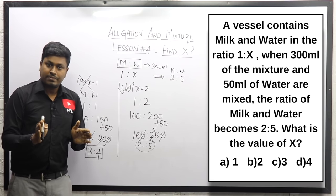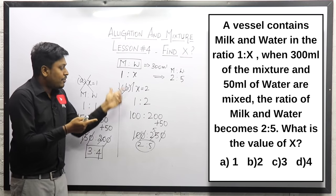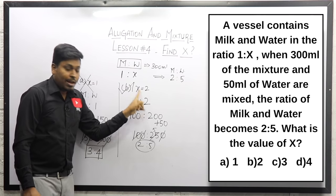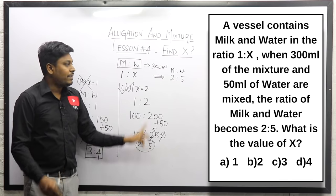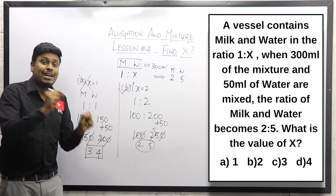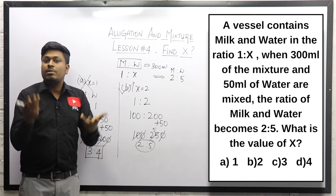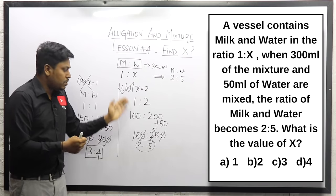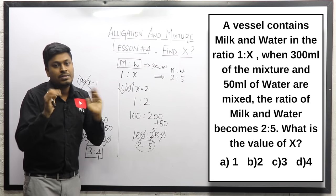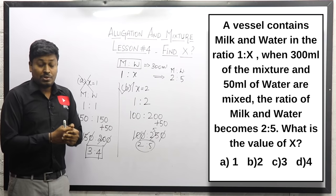While substituting x equal to 2, I got the answer 2 is to 5, so the value of x is 2. By using the options, I substituted the value of x and checked whether I got the ratio 2 is to 5. In the first option I got 3 is to 4, so it was wrong. With x equal to 2, I got 2 is to 5 — correct. Beginners can use this approach, but with more practice, try to calculate mentally.